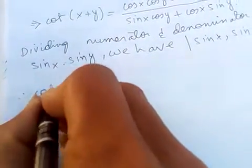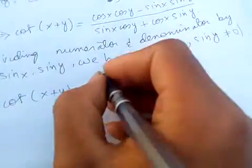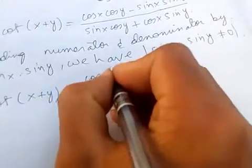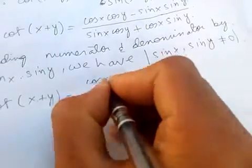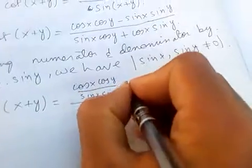Therefore we get cot(x+y) is equal to, now let's divide: cos x cos y over sin x sin y minus sin x sin y over sin x sin y.